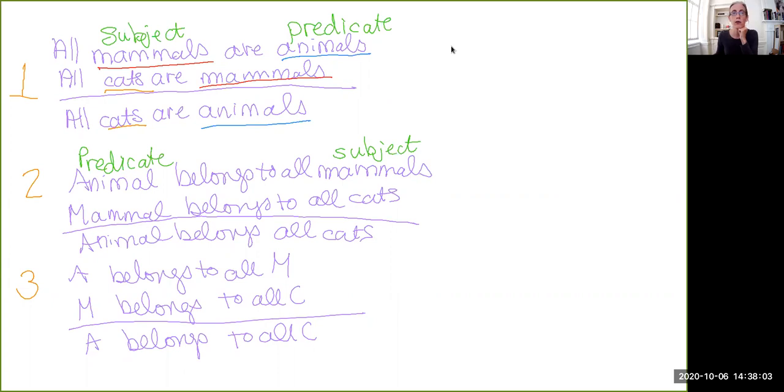And this is where the fact that we introduced those shorthands for the four categorical propositions comes into play. So we can do one more sort of translation step to get a fourth form of argument by recognizing that each one of these is a belongs to all proposition. So why write that out when I could just say that animal belongs to all mammal, mammal belongs to all cat. Therefore, animal belongs to all cat. And look at that. We have gone from a completely English language argument to something that is completely symbols and abbreviations.